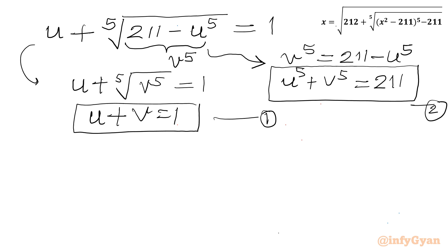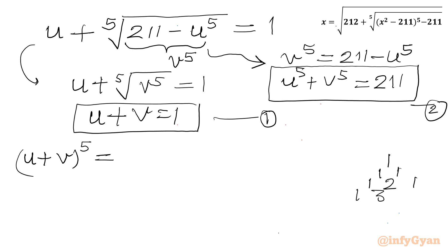To solve these, I will use the binomial expansion of (u + v)⁵. We need the expansion coefficients, so I'll write Pascal's triangle: row for power 2 is 1, 2, 1; power 3 is 1, 3, 3, 1; power 4 is 1, 4, 6, 4, 1; and power 5 is 1, 5, 10, 10, 5, 1.